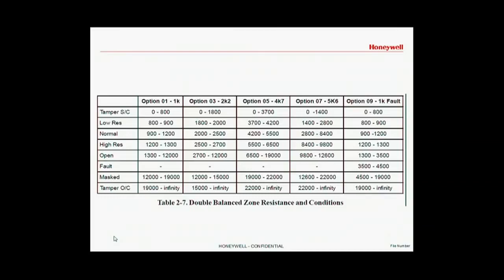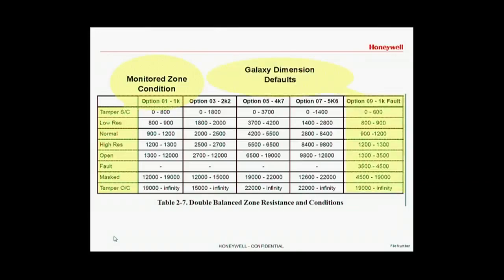When we program a zone under menu 52, one of the options is to set the resistance bands that the Galaxy looks for. The default monitor zone conditions are on the left hand side, and the option that is at default for the Galaxy is on the far right hand side.